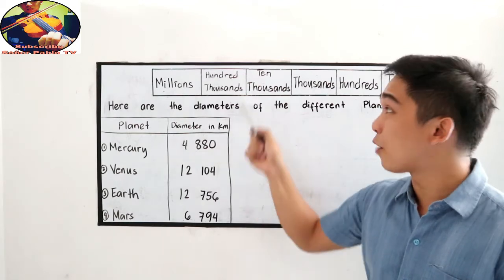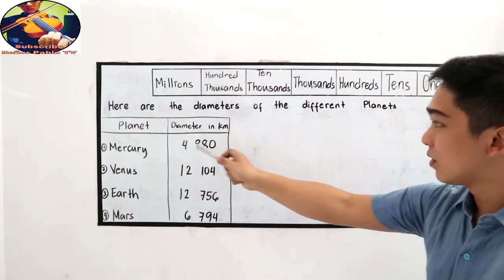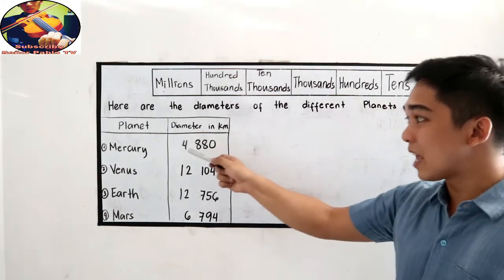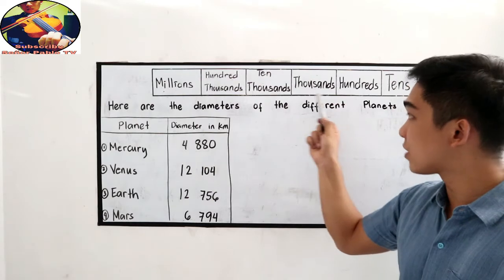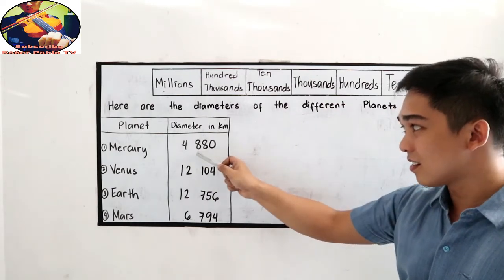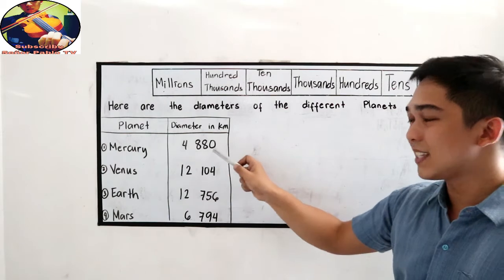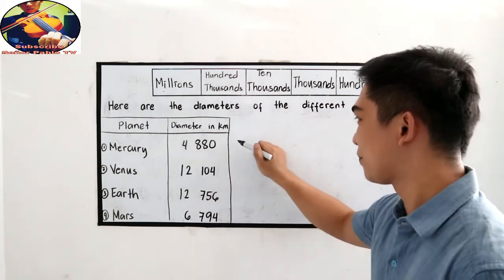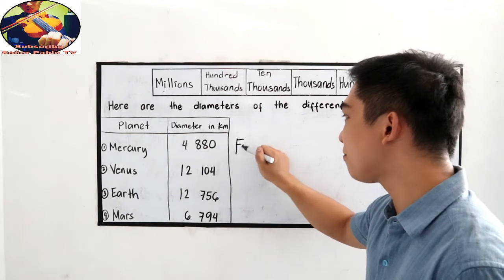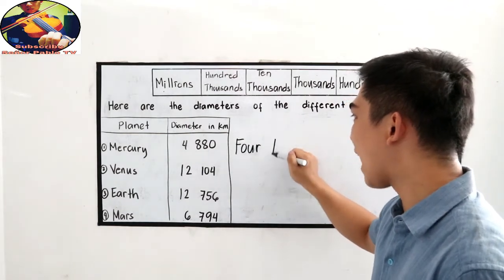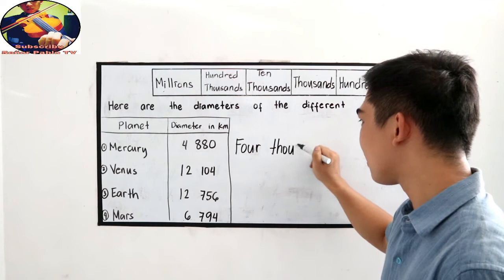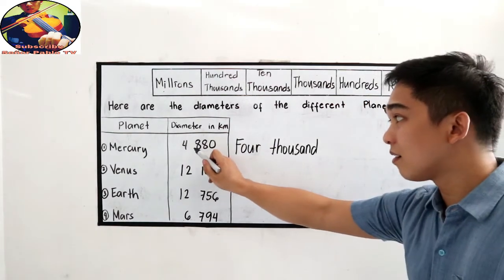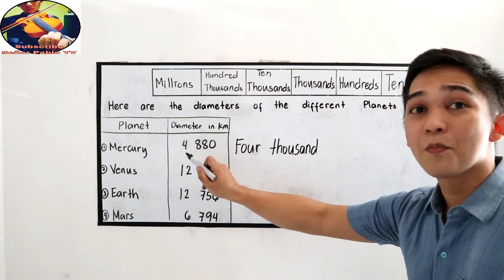Let us first recall our place value: ones, tens, hundreds, thousands, ten thousands. In naming this, it is 4,880. That is right. Four thousand.